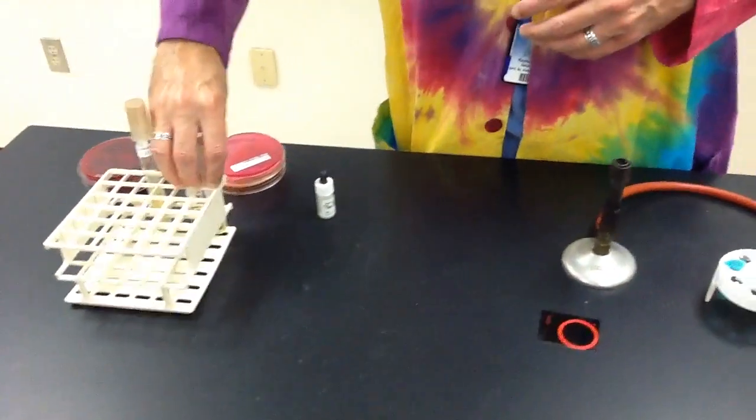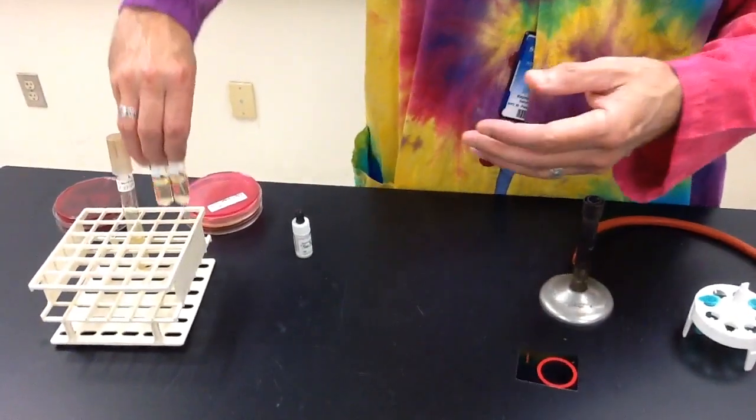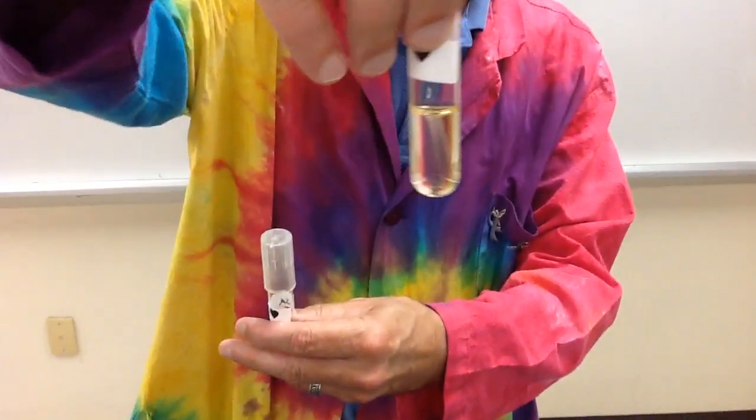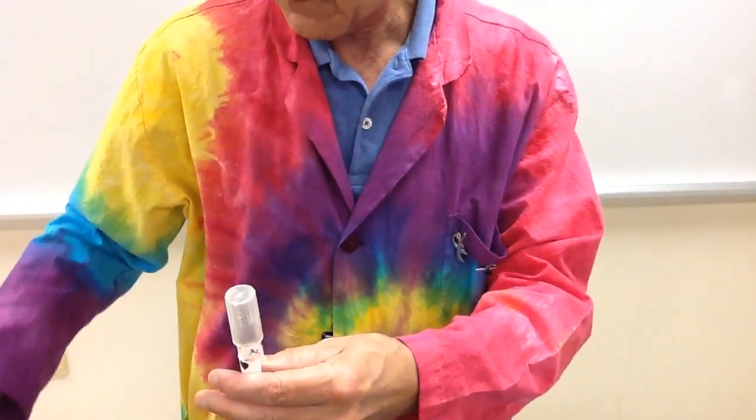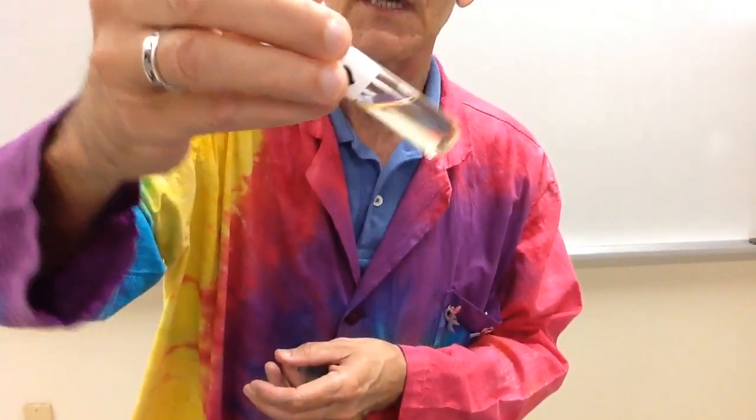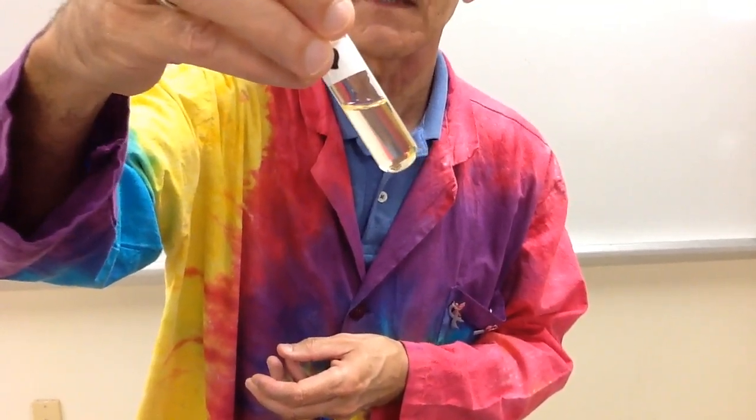So the next test that can be done is to look for an enzyme called gelatinase, which will break down gelatin. So gelatin starts out as a solid, and if no enzyme is produced, it stays solid. If gelatinase is produced, however, it breaks down the gelatin, and you can clearly see that that's liquefied at this point.